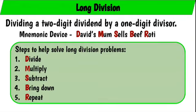So our mnemonic device, David's Mom Sells Beef Rooty, helps us remember the steps: divide, multiply, subtract, bring down, and repeat.